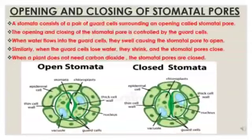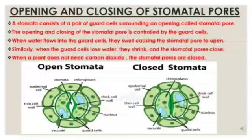Carbon dioxide is absorbed through the stomata. Stomata are the tiny pores present in the leaves, and the opening and closing of stomatal pores depend on guard cells. Two pictures are given showing open stomata and closed stomata. A stoma consists of a pair of guard cells surrounding an opening called the stomatal pore. Guard cells are kidney bean shaped.